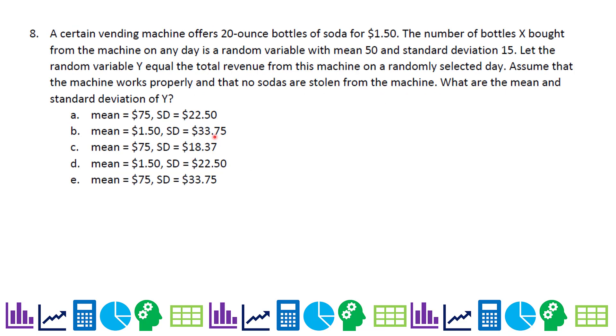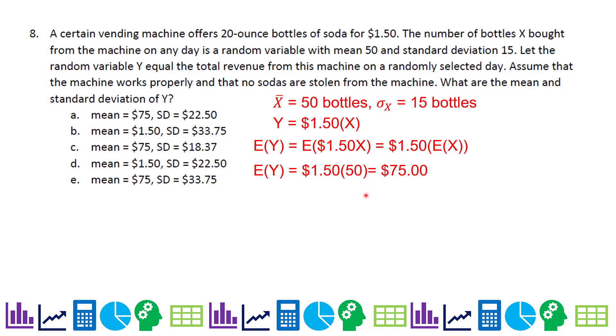A certain vending machine offers 20 ounce bottles of soda for $1.50. The number of bottles X bought from the machine on any day is a random variable with mean 50 and standard deviation 15. Let the random variable Y equal the total revenue from this machine on a randomly selected day. Assume that the machine works properly and that no sodas are stolen from the machine. What are the mean and standard deviation of Y? My profit's going to be $1.50 per soda. So I'm going to take $1.50 and multiply it by the number of bottles of soda.